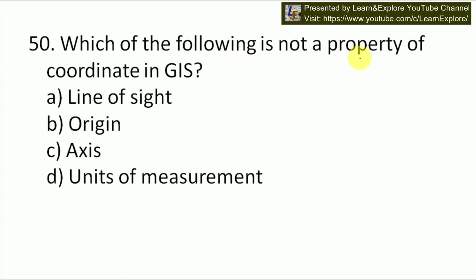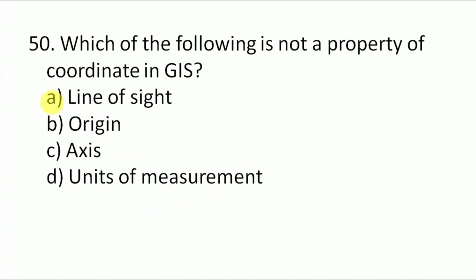Next question: which of the following is not a property of coordinates in GIS — line of sight, origin, axis, or units of measurements? The coordinates used in GIS have three properties: origin, axis, and units of measurements. Each of these is applied in every aspect of GIS software. Line of sight is not a property of coordinates in GIS — our answer will be A. Origin, axis, and units of measurements are properties of coordinates in GIS.